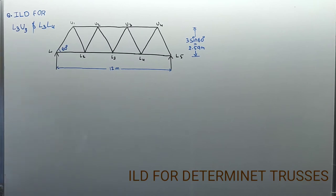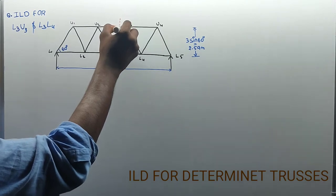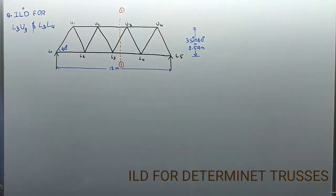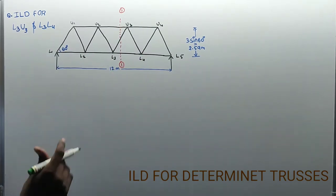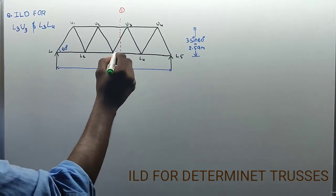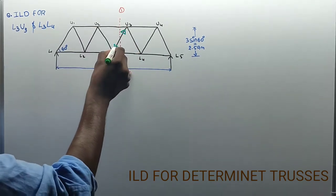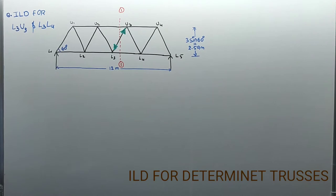Let's discuss the topic: finding ILD for L3U4 member. The member given is L3U4, so cut the member — this is section 1-1. Now give the arrows for this section. This is an inclined member, so in a Pratt truss the assumption we are taking is that this member undergoes compression. Let's check whether that is right or wrong.